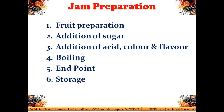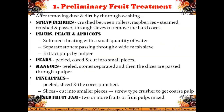Jam preparation involves six major steps: fruit preparation to make a pulp, addition of the requisite quantity of sugar, addition of additives like acid, color, and flavor, boiling to a consistency judged by an endpoint test, and finally storage of the prepared product. After selection of ripe fruits and thorough washing to remove pesticides, you proceed to fruit preparation.